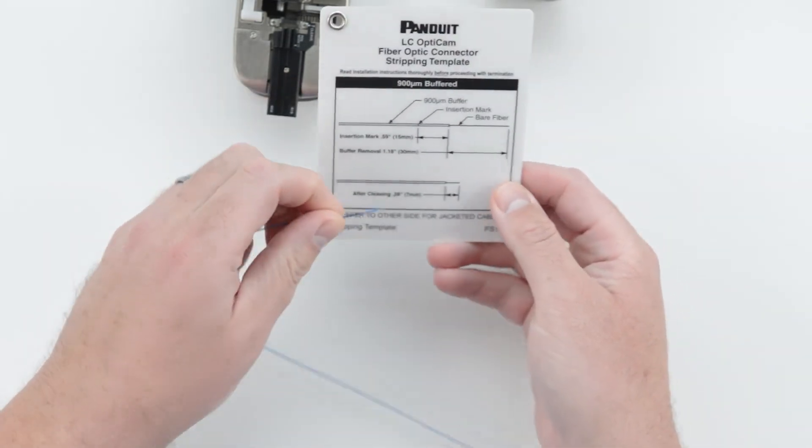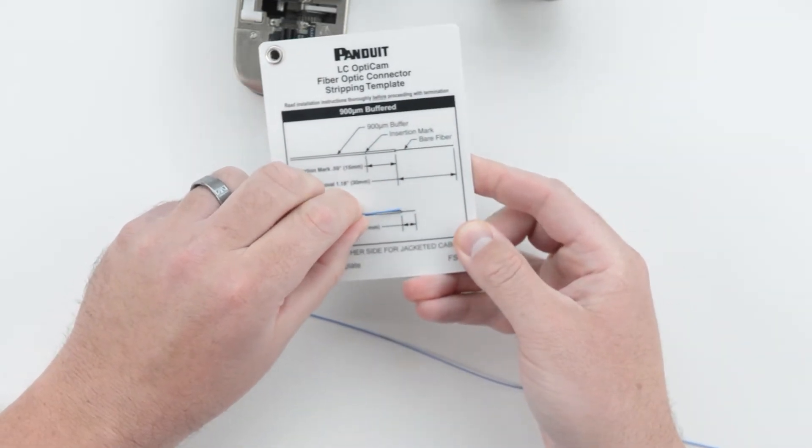Using the LC template card, verify that the cleaved fiber is 7 millimeters long.